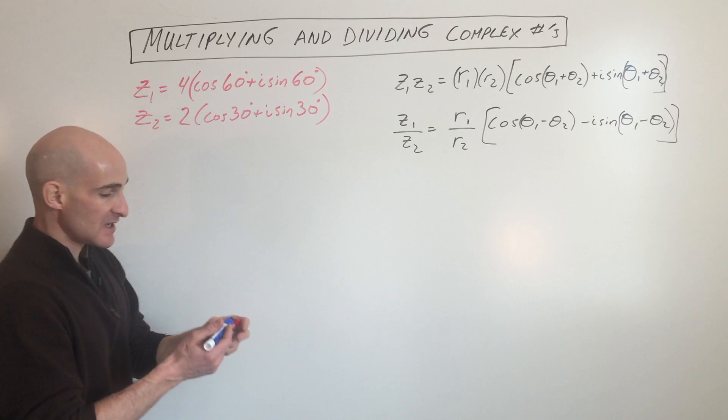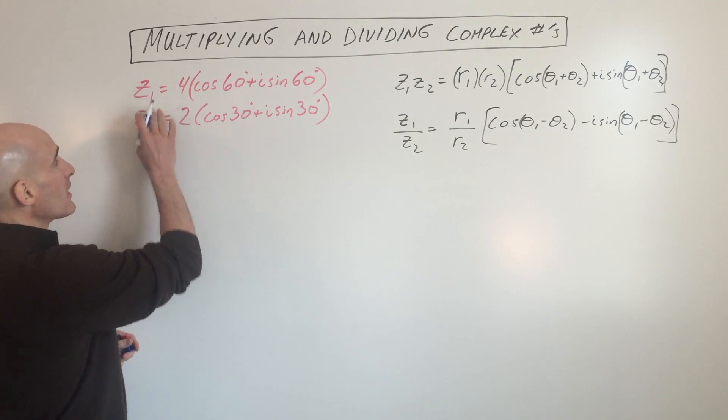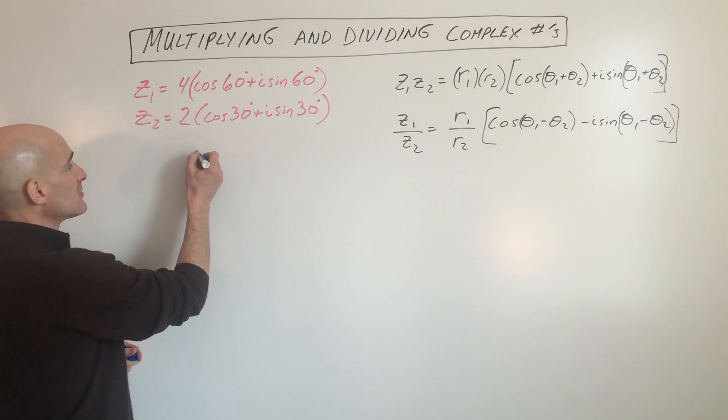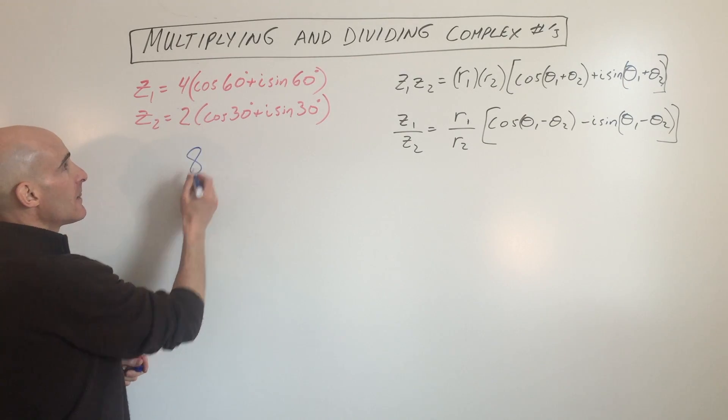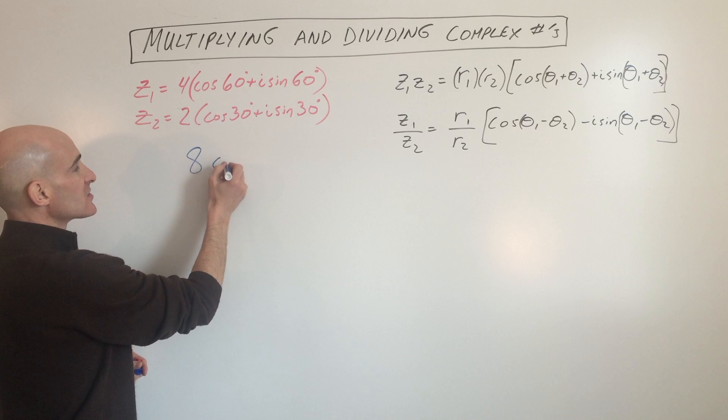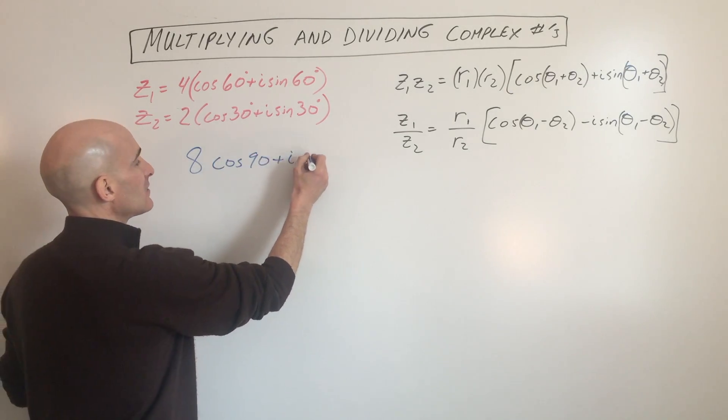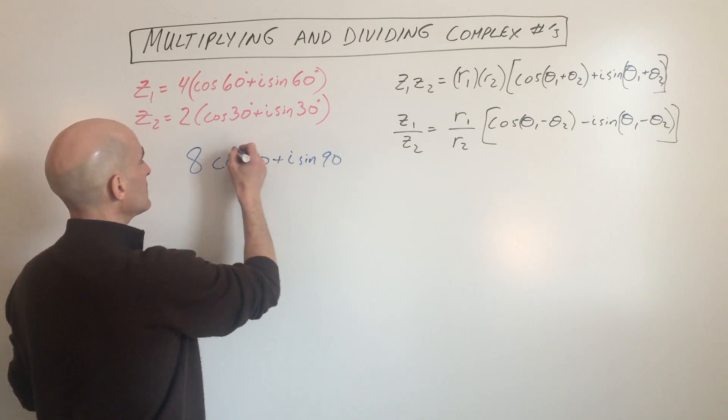Say we want to multiply these two complex numbers together. We're going to multiply the r values, so that's eight, and we're going to add the angles. So that's going to give you cosine of 90 plus i sine of 90 degrees.